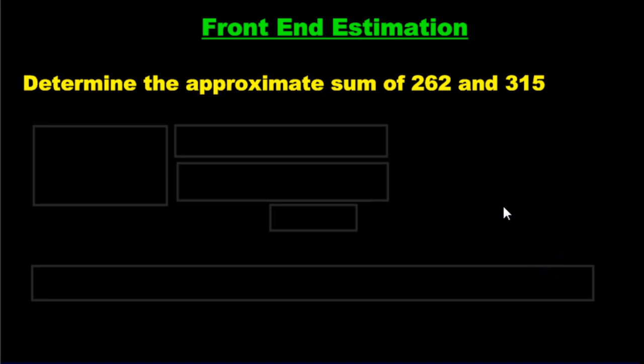I'd like to take a few moments and teach you a strategy that is very practical, something that you can use in your lives all of the time. It's a strategy called front-end estimation, and what it allows you to do is to add numbers or subtract them or multiply them, divide them mentally, and get an approximate answer.